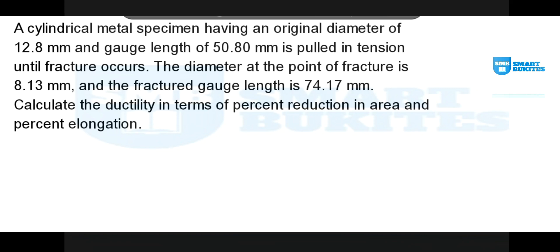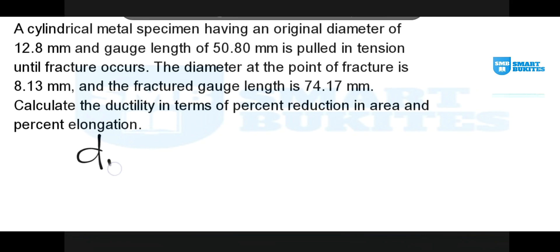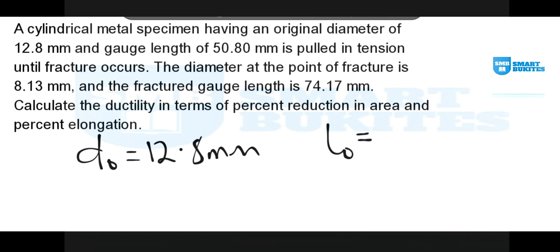Today the solution is going to be on ductility, whereby we are given a cylindrical metal specimen having an original diameter of 12.8 millimeters and the gauge length — that's the original length of that specimen — is also 50.8 millimeters.